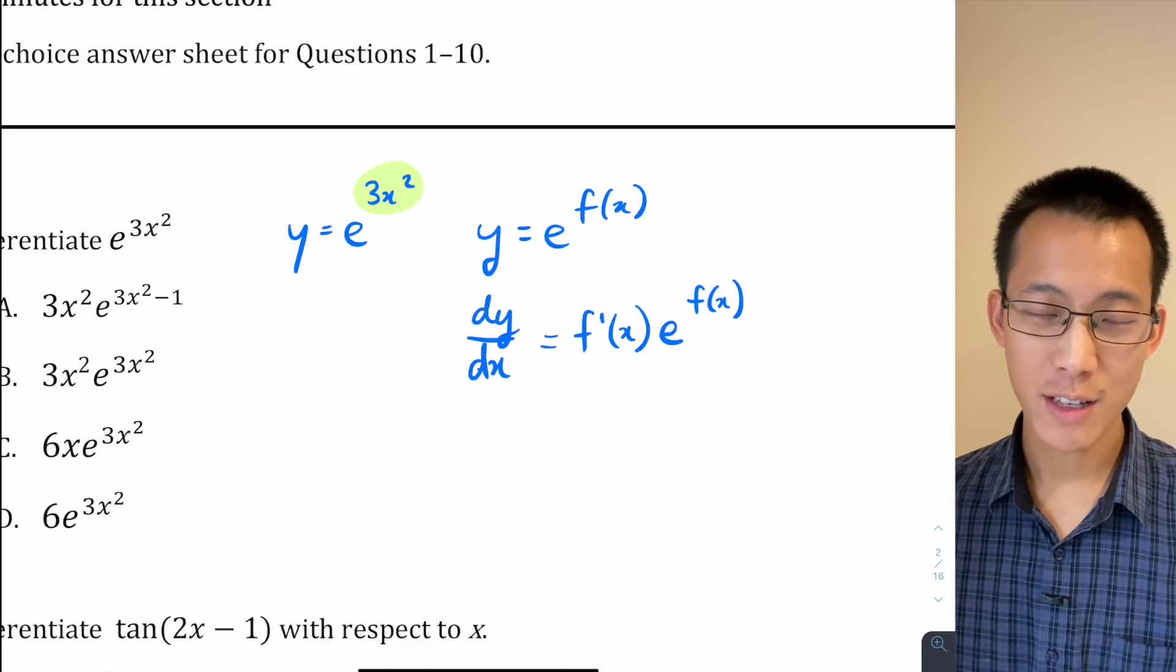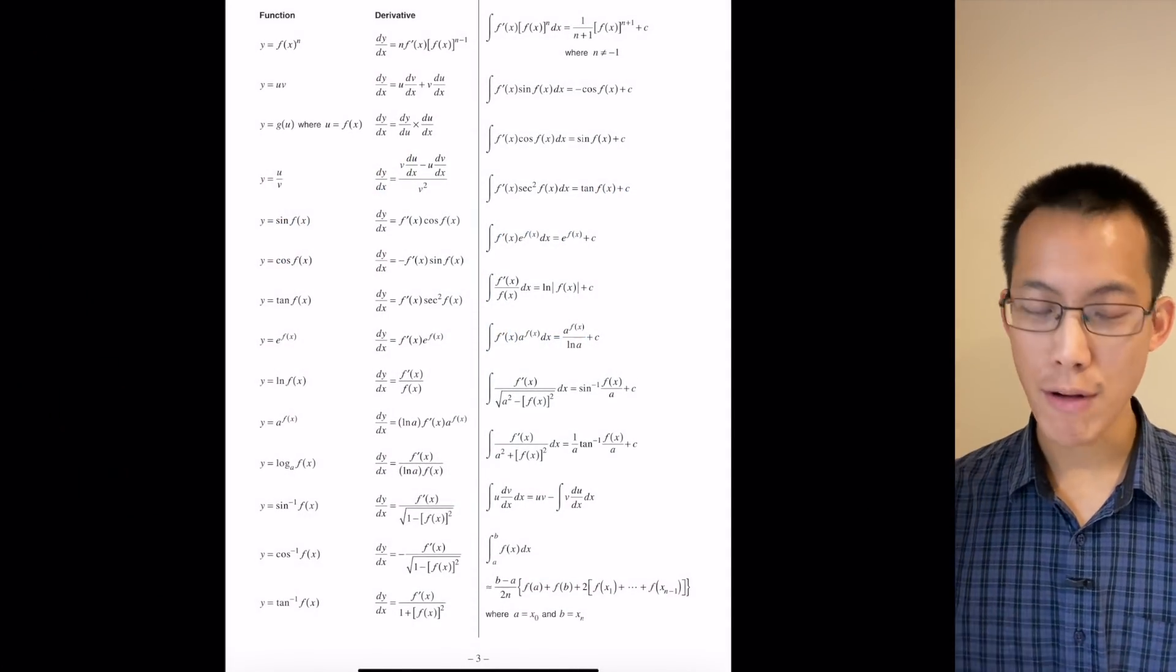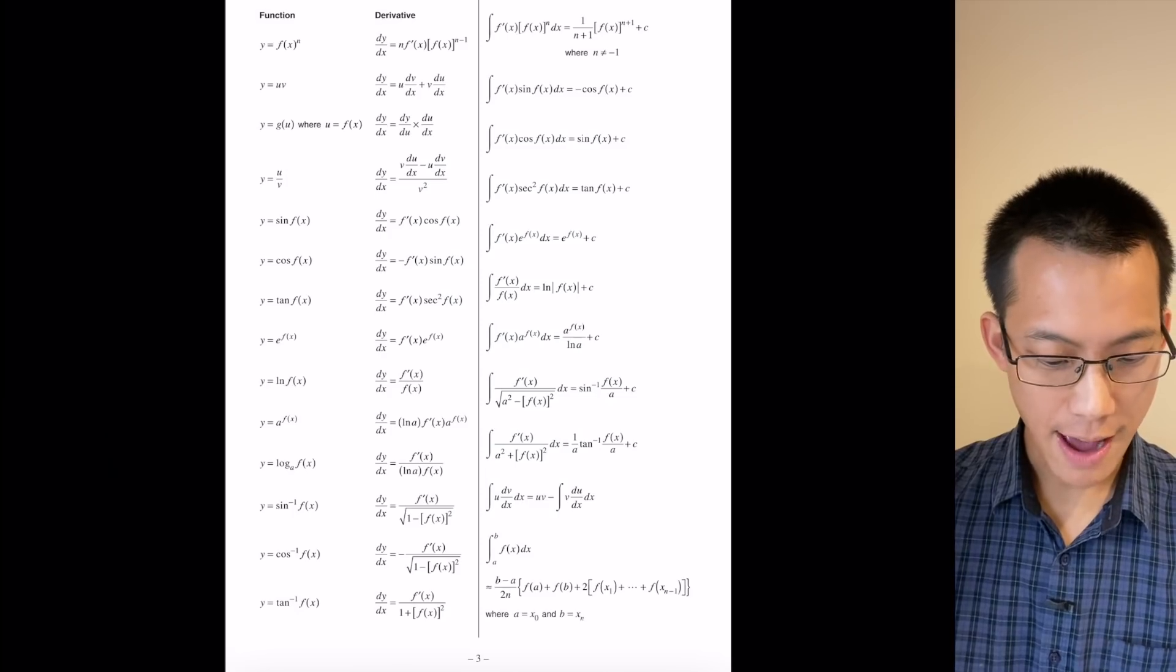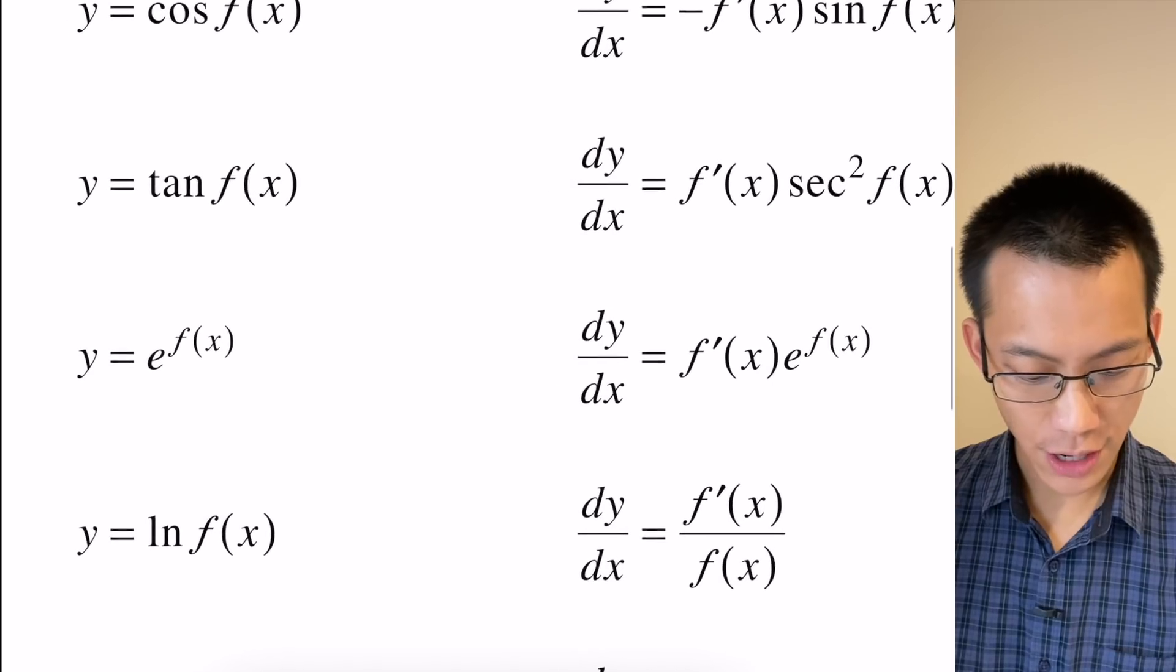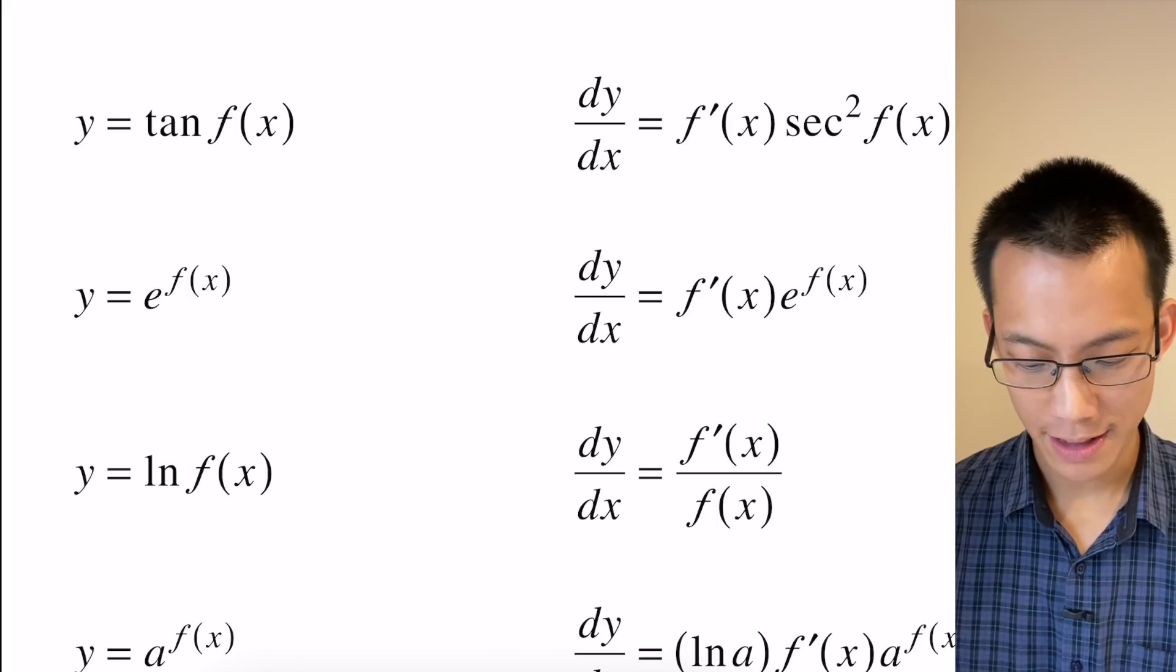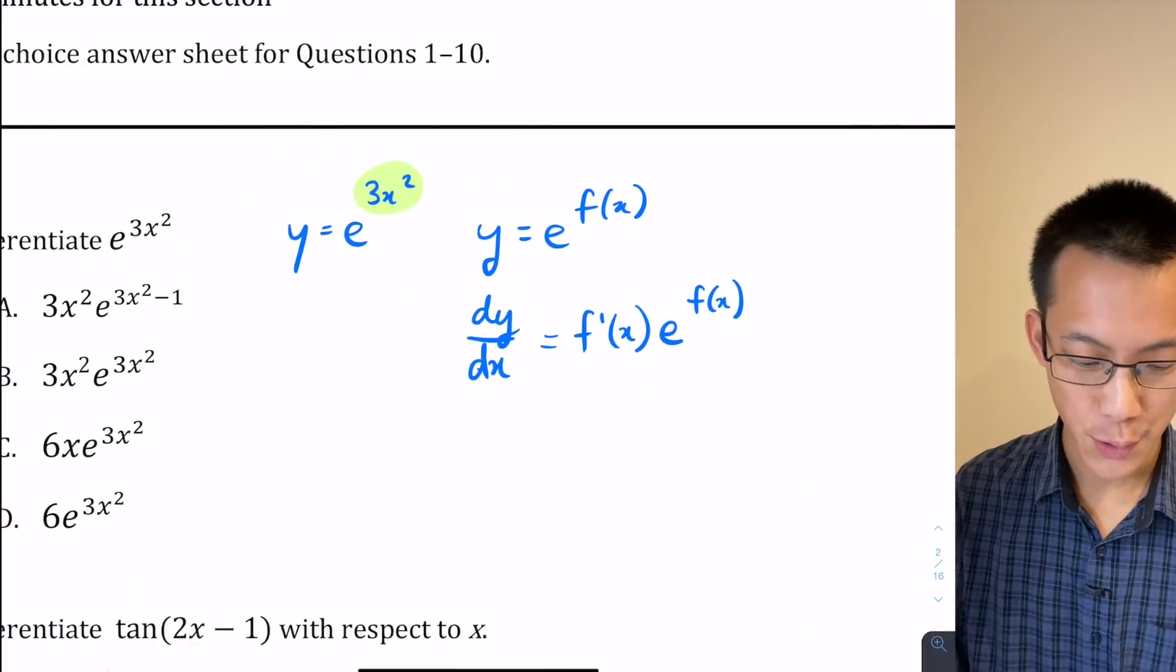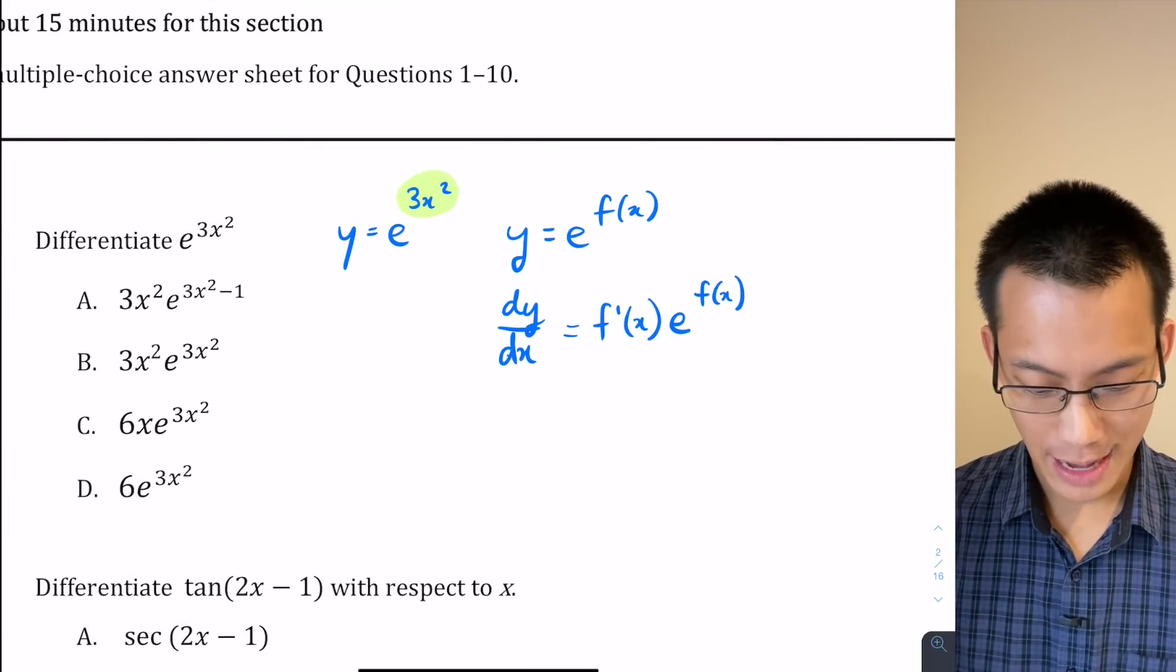If that's something that you struggle to remember, then do recall it is actually found on the reference sheet. So here's the differential calculus section over here on the left. If you go over here on the left hand side all the way down here is the particular version that we're looking at: y equals e to the f(x), and there's the result for the derivative on the right hand side. So if you're struggling to remember it, it is there, but it's faster of course if you can just do it straight off the top of your head from memory. Let's go ahead and do that now.